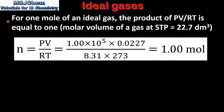For one mole of an ideal gas, the product of PV divided by RT is equal to 1. The equation states that the amount in moles of an ideal gas is equal to PV divided by RT. If we substitute in the pressure and temperature at STP, we get a value of 1.00 moles, confirming that for an ideal gas the product of PV divided by RT is equal to 1.